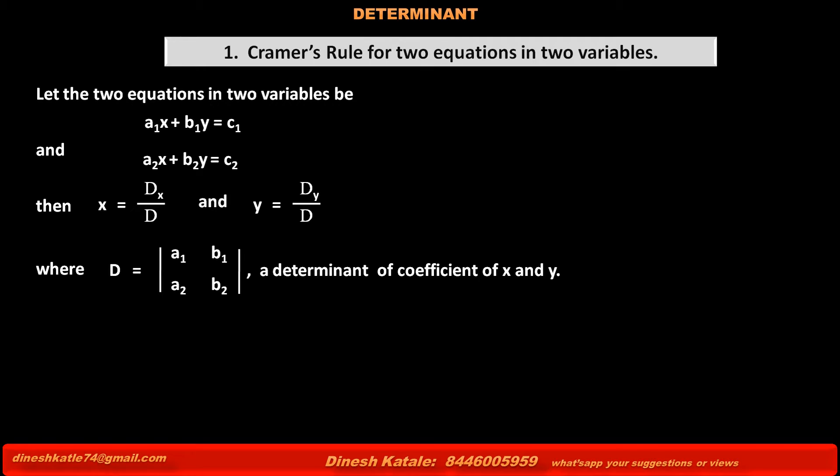Or vertically, we can say the first column a1, a2 are the coefficients of variable x of these two equations, and the second column b1, b2 are the coefficients of variable y of same two equations.